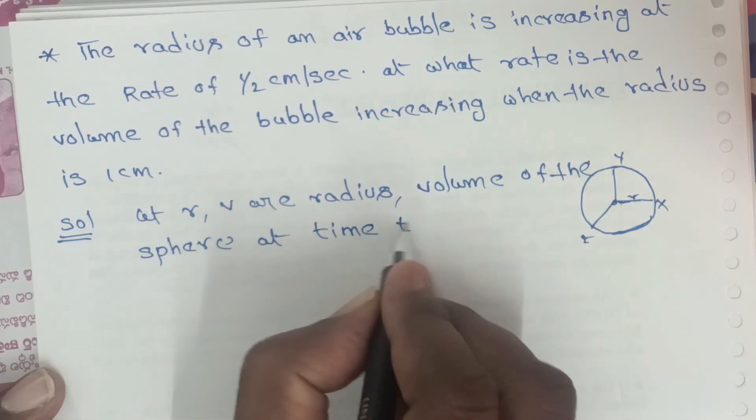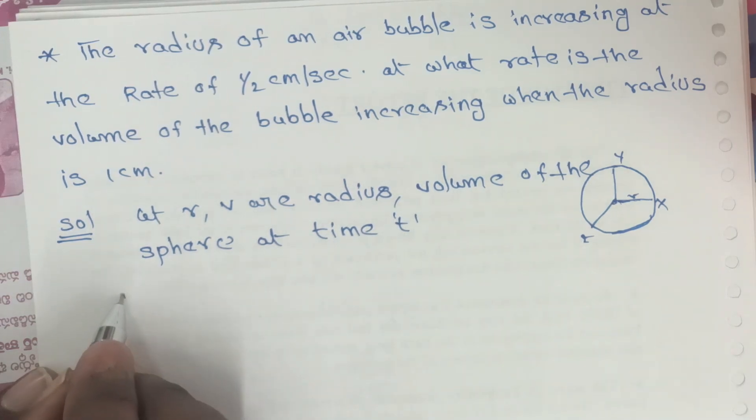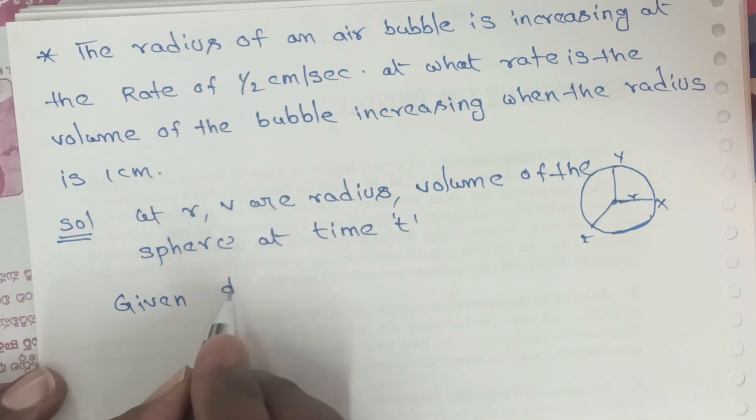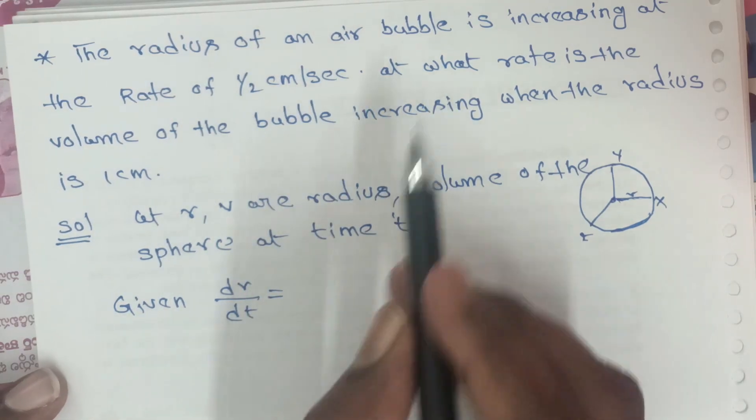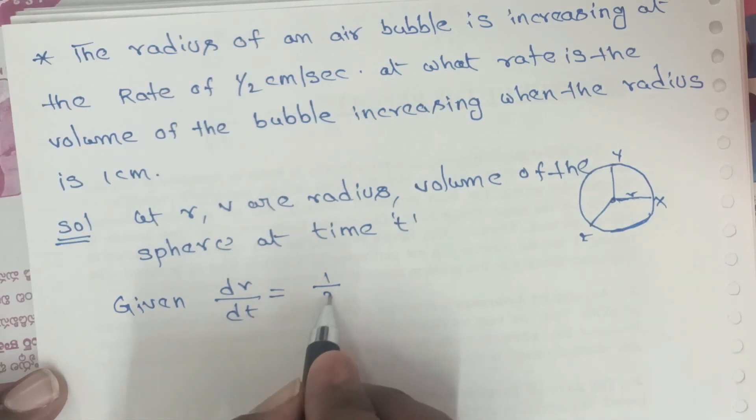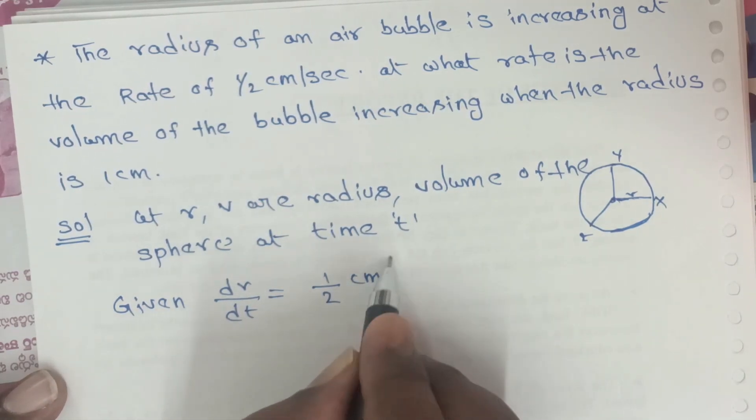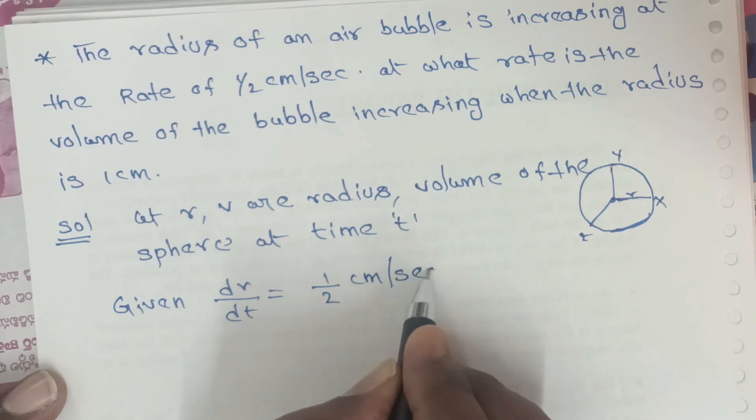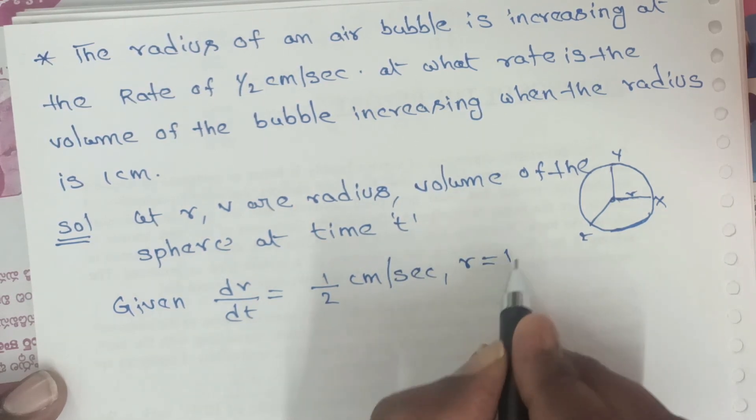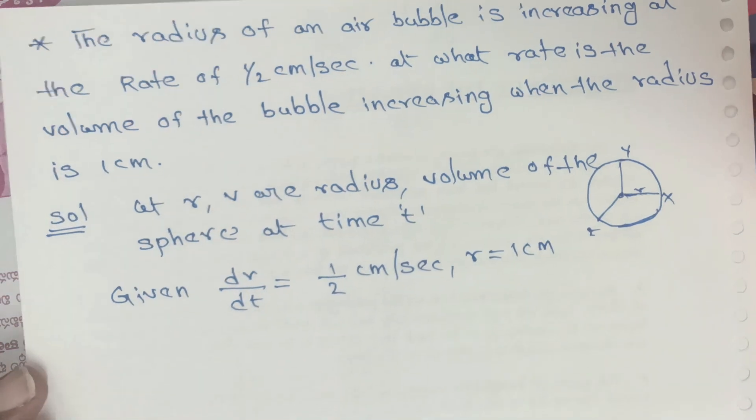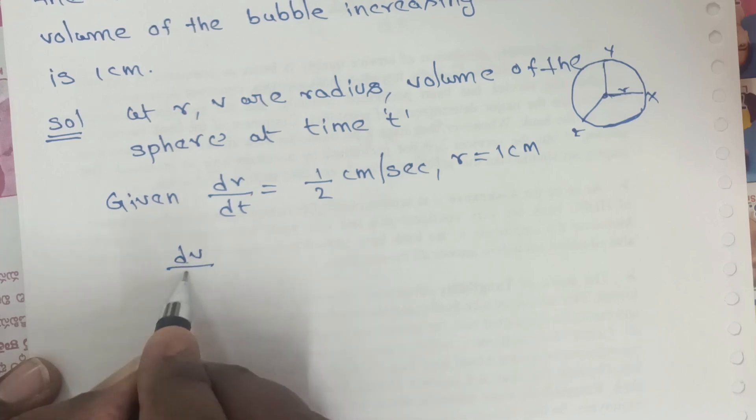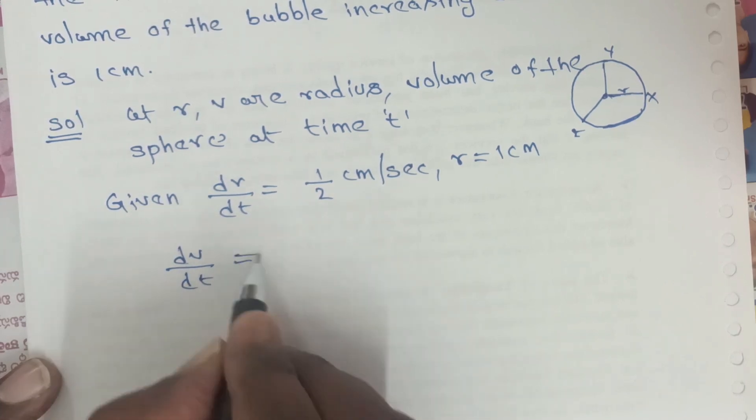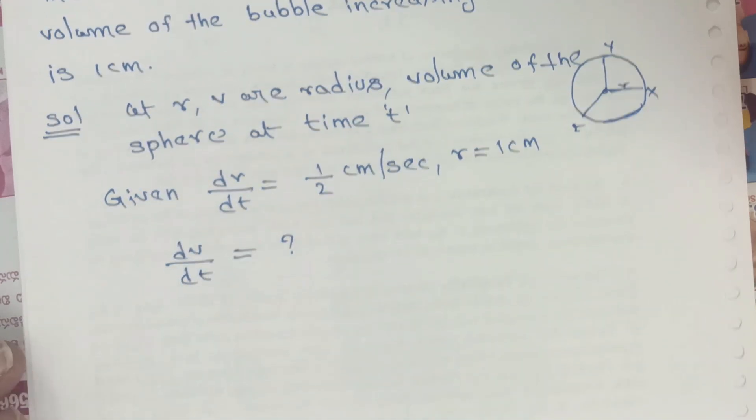Given: dr/dt equals 1/2 centimeter per second, and radius value is 1 centimeter. We need to find dv/dt, which is the rate of change of volume. Therefore, we start with the volume of the sphere.